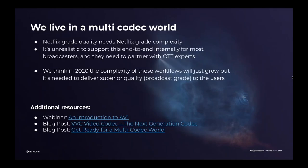In general, we hear people always talking about Netflix great quality. But if you want Netflix great quality, it also needs Netflix great complexity. Netflix is using all of the codecs and very complex technologies like per-title encoding, for example, to deliver the best possible quality for their users. If you want to do so, you also need to deal with the same complexity. We think it's unrealistic to support this end to end internally for most broadcasters — they need to partner with somebody who is really an expert in the OTT area so they can focus on what they do well and focus on the content. You only have so many developers and so many resources. You need to focus on the things you are doing really well.